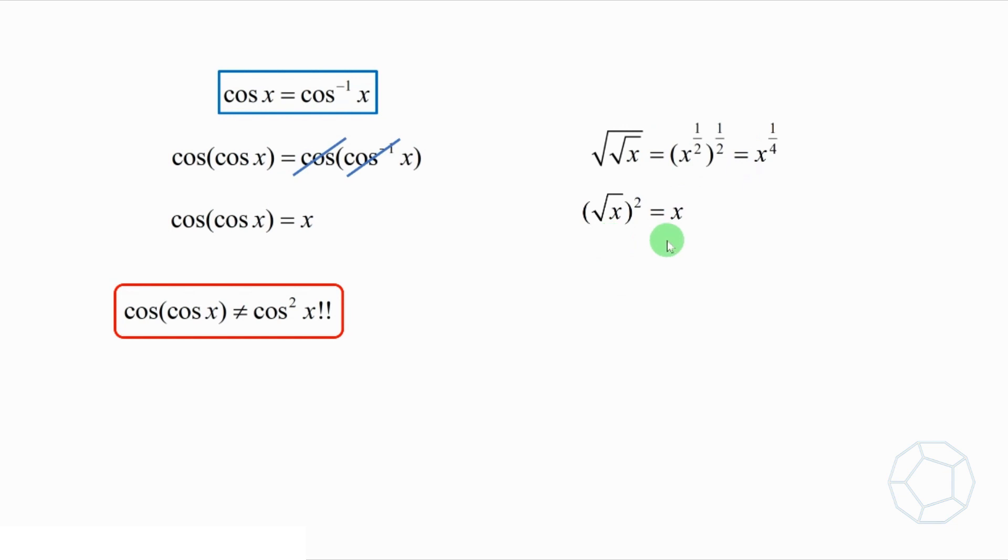So definitely, the square root of square root of x is not equal to the square root of x whole square. That means taking the operation twice is not the same as squaring it. Anyway, this approach makes the equation more and more complicated.